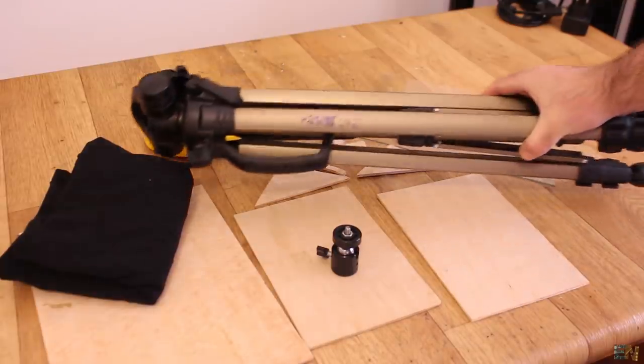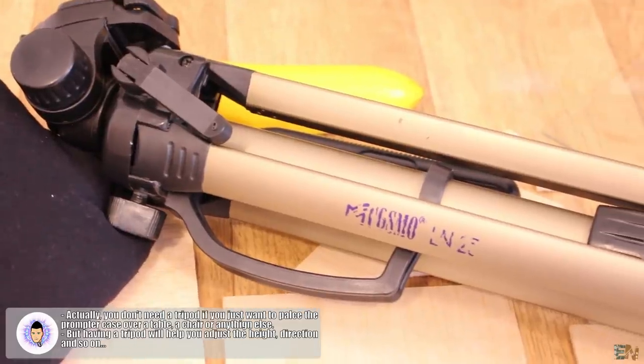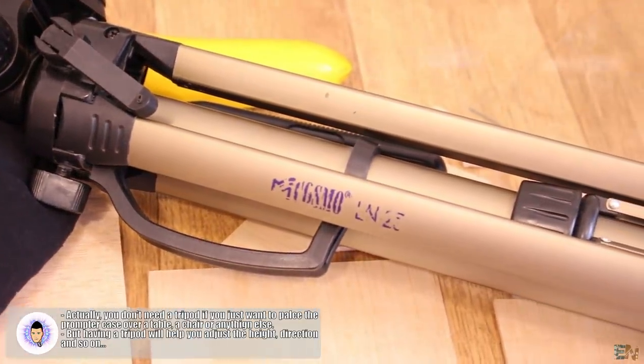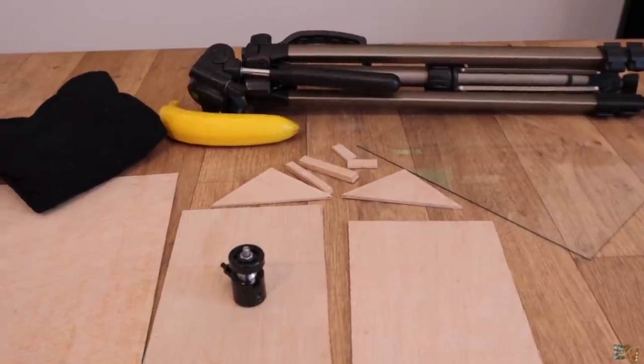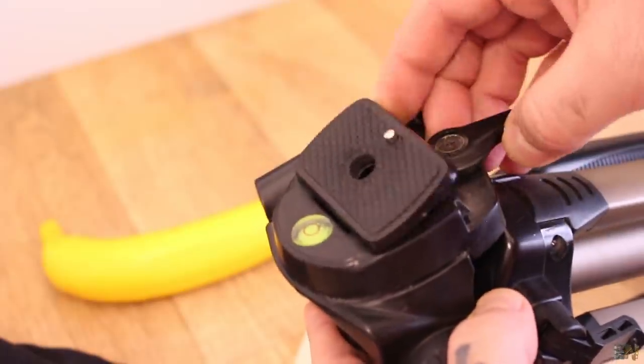So finally for the material list we also need a tripod. This was also very low cost from eBay. I bought it so I could use it with my second camera sometimes, so it doesn't have to be that high quality. But make sure it has a camera mount like this one.